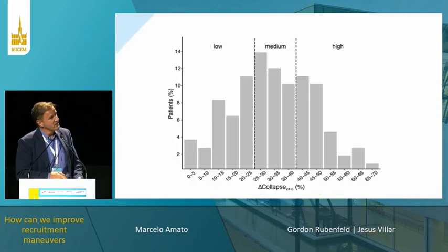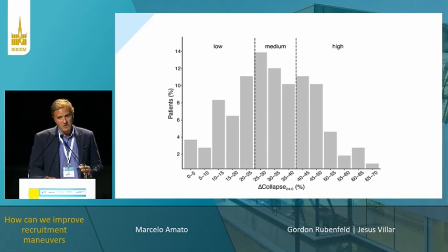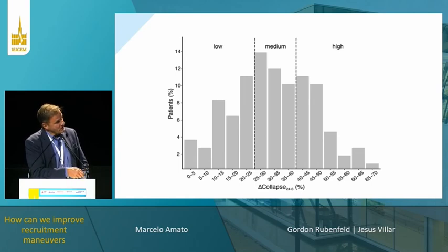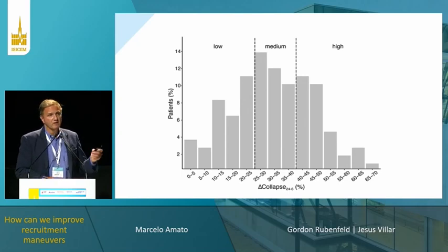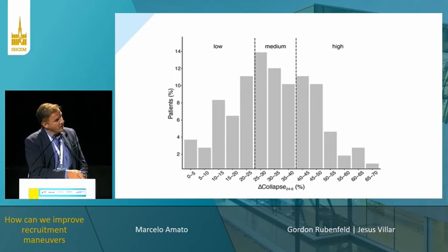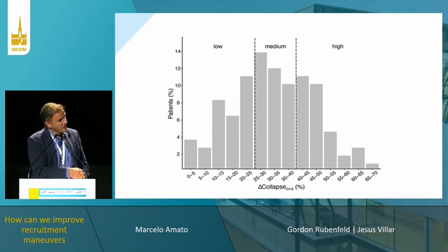Using this method in a population of 107 COVID patients, we obtained these results. This is the number of patients and how much parenchyma could be recruited at the pressures shown — plateau pressure of 45. We divided the results into three tertiles: high, medium, and low recruiters.